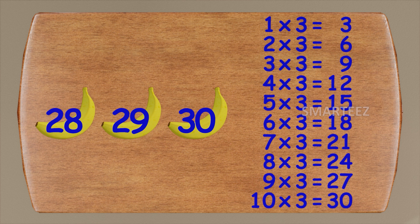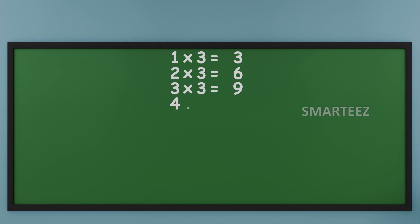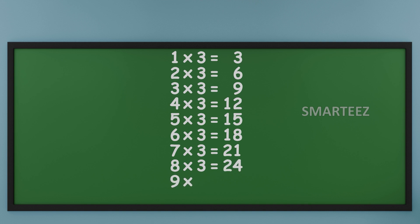Let's do the tables now. Take a look: one times three is three; two times three is six; three times three is nine; four times three is twelve; five times three is fifteen; six times three is eighteen; seven times three is twenty-one; eight times three is twenty-four; nine times three is twenty-seven; and ten times three is thirty.